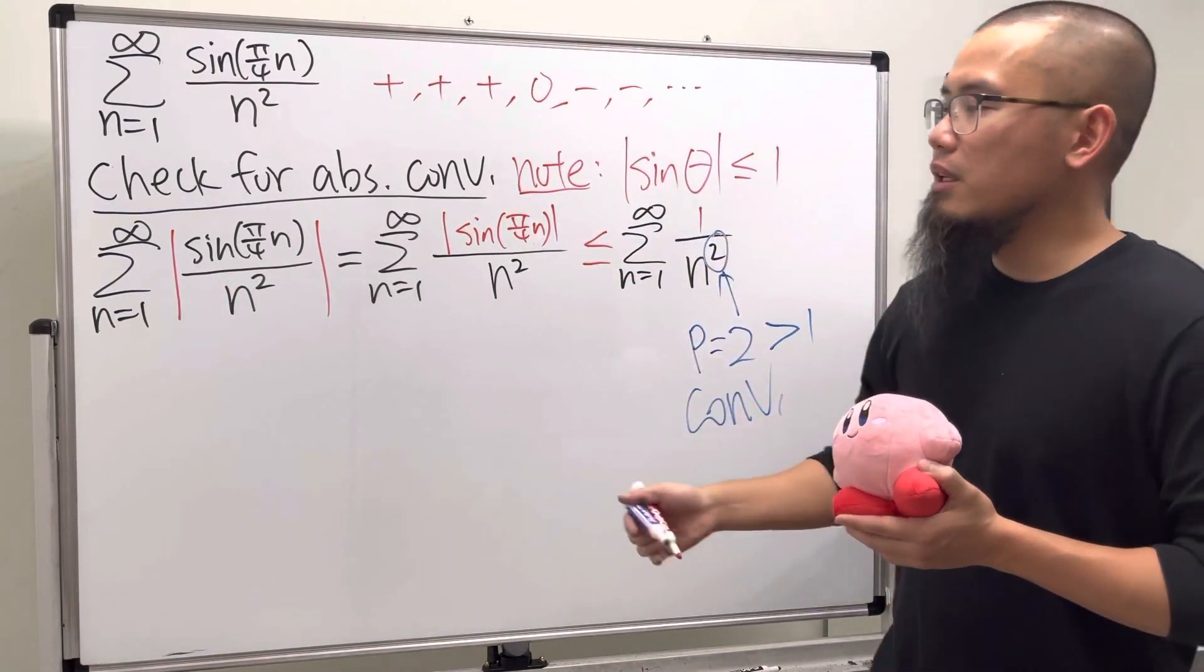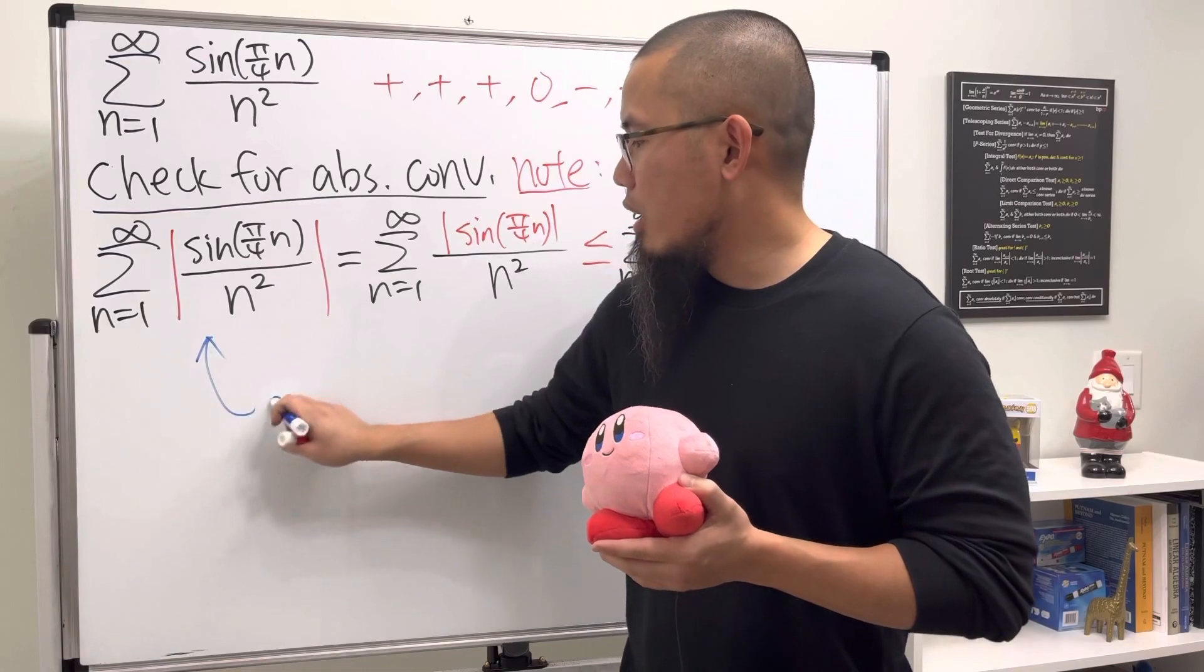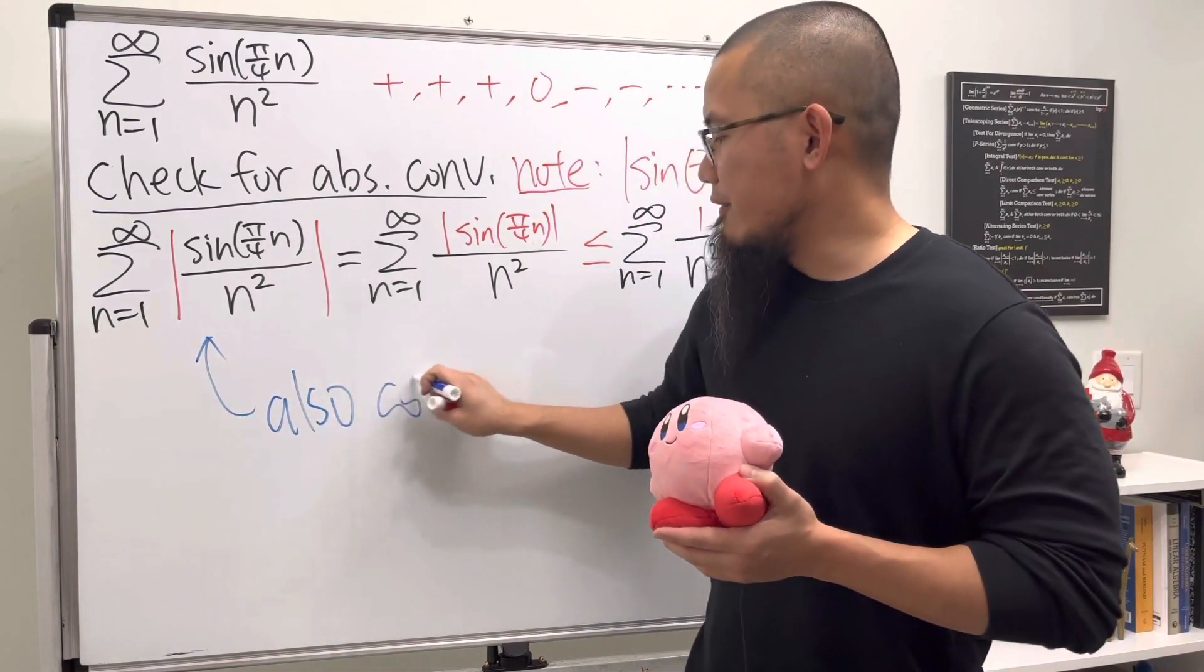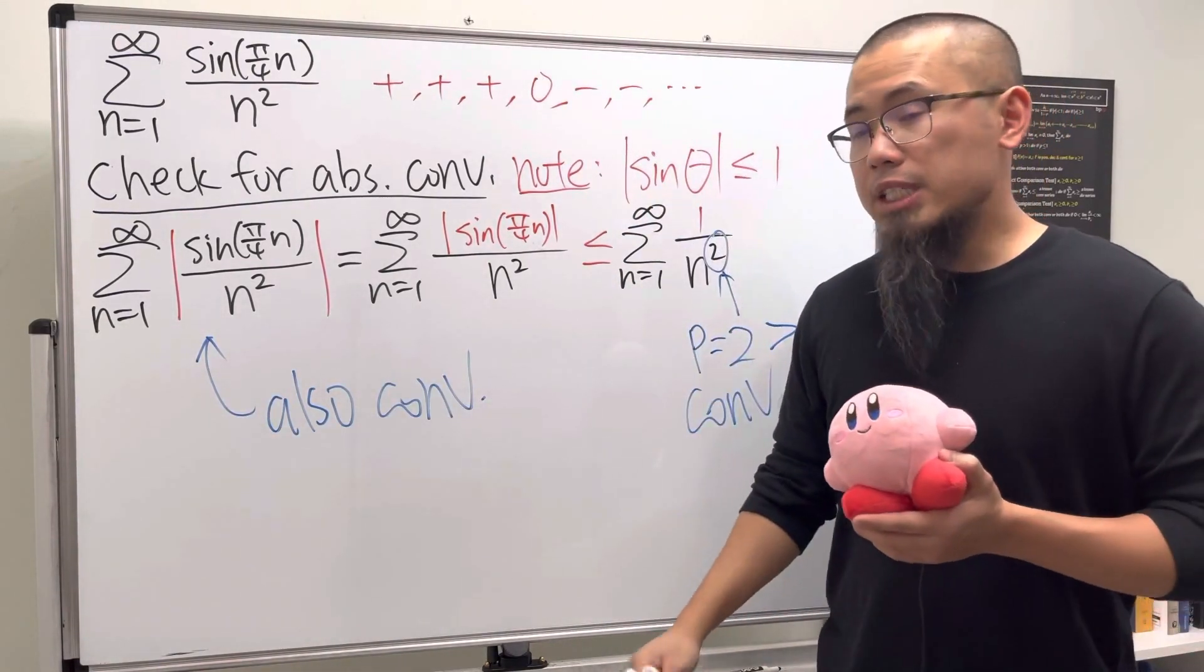We have this series is actually less than or equal to a convergent series, so we know this also converges because we use this inequality.